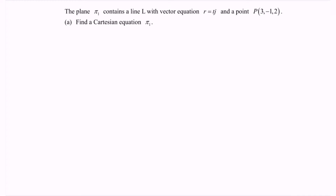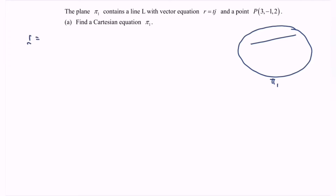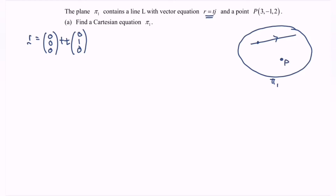Try to imagine the situation. We have the plane named pi 1, which contains the line with the vector equation r equals tj. Here r equals tj, where we have (0, 0, 0) as point A plus tj, so the direction vector is (0, 1, 0). That is the vector equation of line l, meaning we have point A at (0, 0, 0) and direction (0, 1, 0). The plane also contains point P at (3, -1, 2).